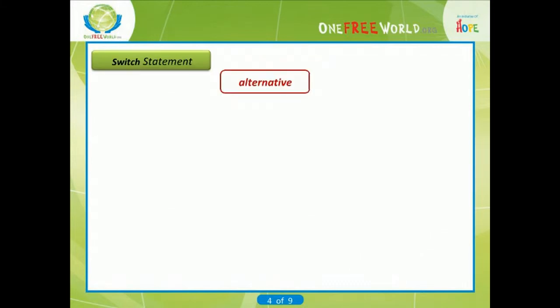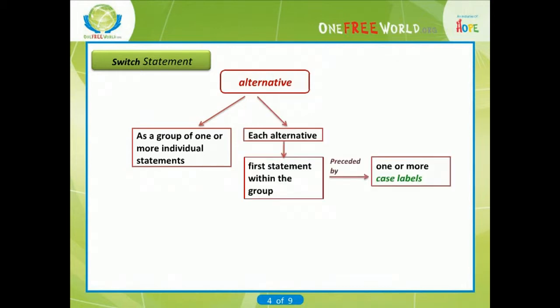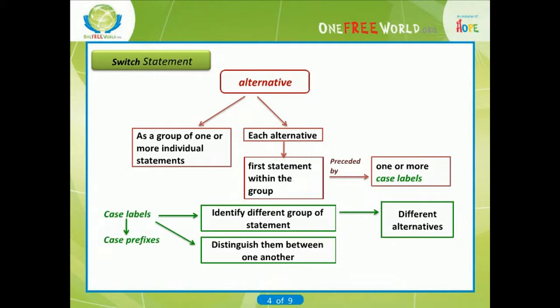Each alternative specified is expressed as a group of one or more individual statements within the overall embedded statement. For each alternative, the first statement within the group must be preceded by one or more case labels. Case labels, also known as case prefixes, identify the different groups of statements — that is, the different alternatives — and can distinguish them from one another. The case labels must be unique within a given switch statement.